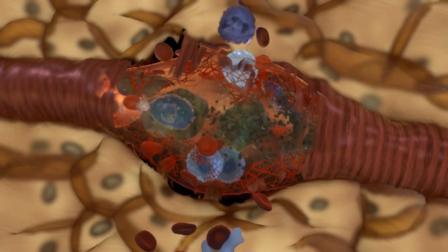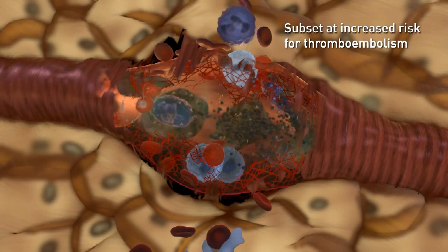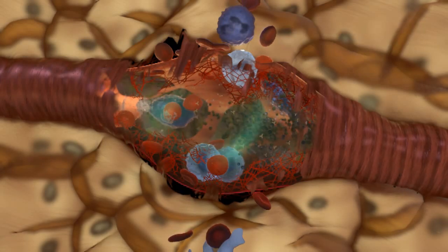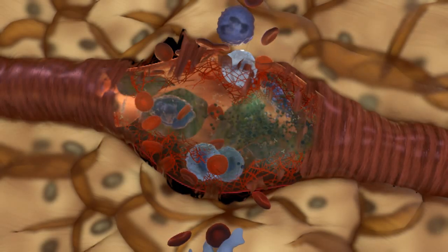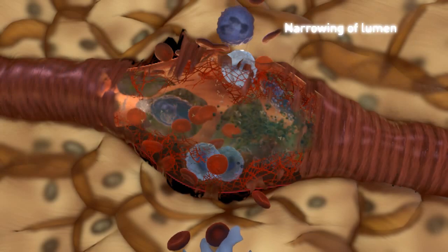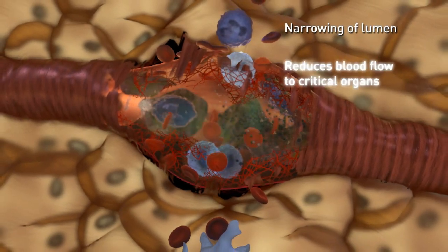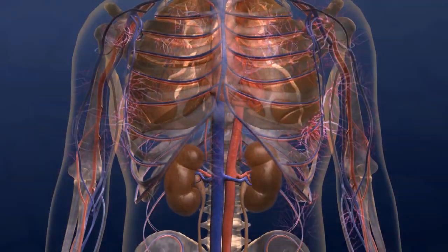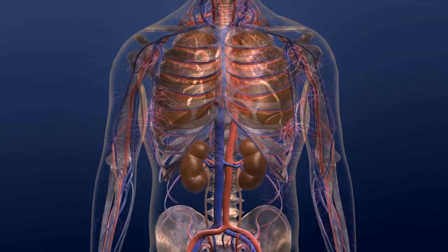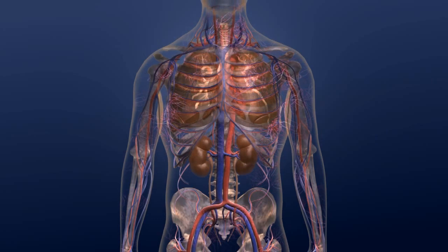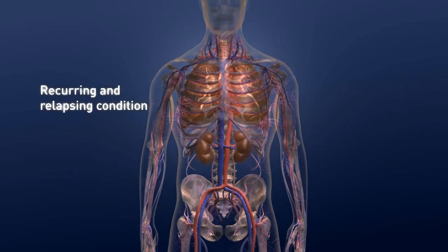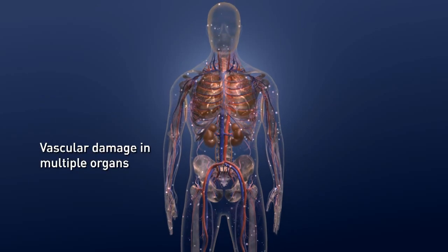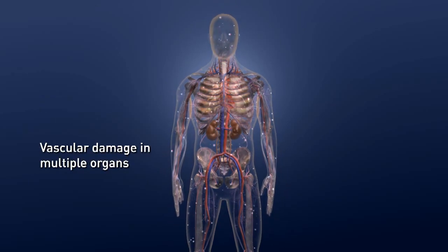In addition, a subset of AAV patients may be at an increased risk for venous thromboembolism. Both the inflammatory process and the ensuing fibrosis may contribute to narrowing of the blood vessel lumen, further reducing blood flow to critical organs. While we've illustrated the proposed pathologic events in a single blood vessel, AAV is a recurring and relapsing condition that is associated with vascular damage in multiple organs throughout the body.